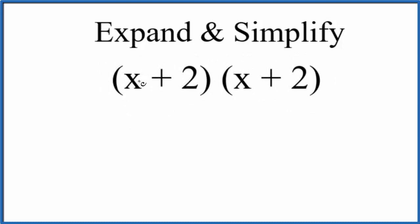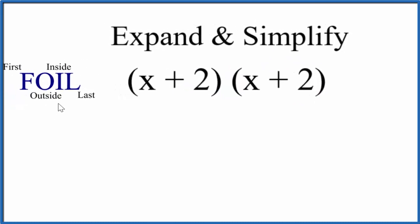So essentially what we'll do is we'll have x times each one of these terms and then we'll do 2 times each one of these terms. An easy way to remember that pattern is the FOIL method.